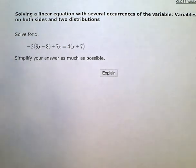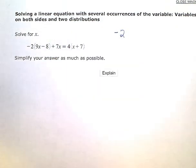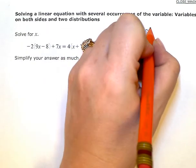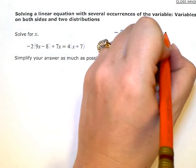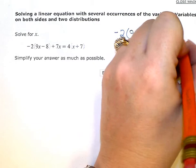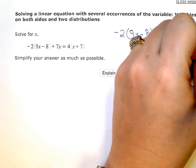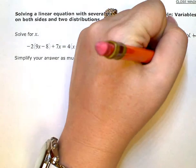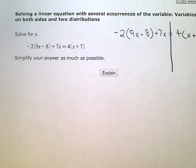I'm going to rewrite my equation over here. I have negative 2 times the quantity 9x minus 8 plus 7x equals 4 times the quantity x plus 7. I've rewritten it to the side just to give myself a little working space. I have no fractions here that I need to clear before I start. So my next step is going to be to work the right and left sides individually and try to simplify.